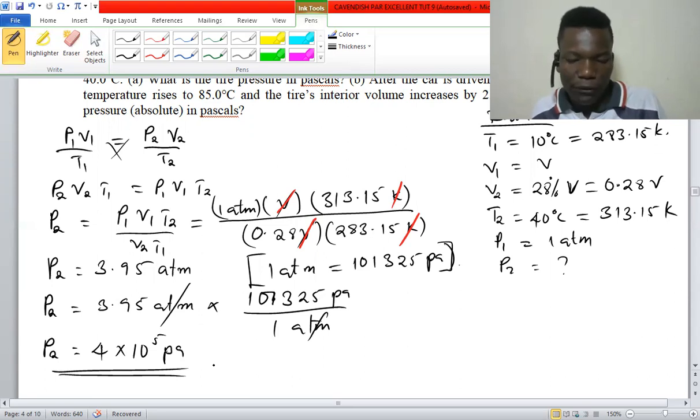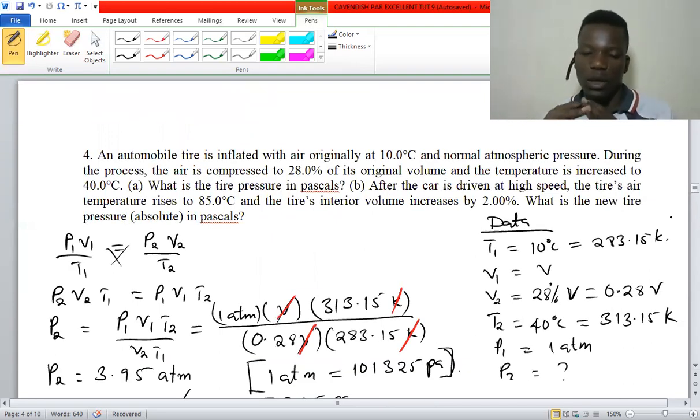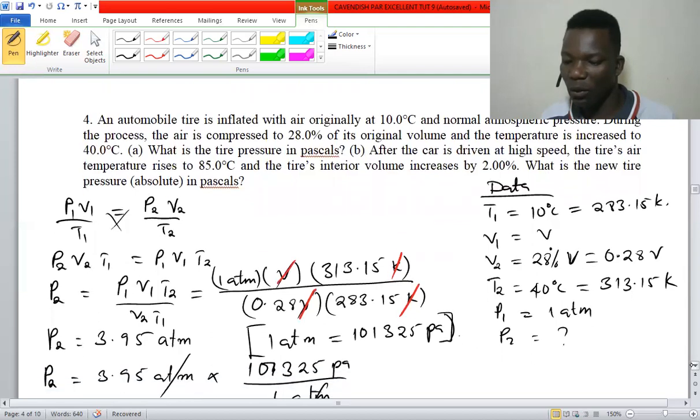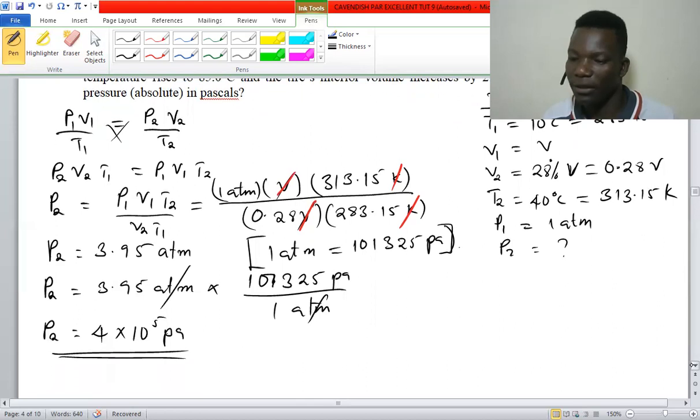For us to solve the second part of this question, the final conditions in question A are going to be the initial states in solving B. After the car is driven at high speed, the tire's air temperature rises to 85 degrees Celsius and the tire's interior volume increases by 2 percent. What is the new pressure?